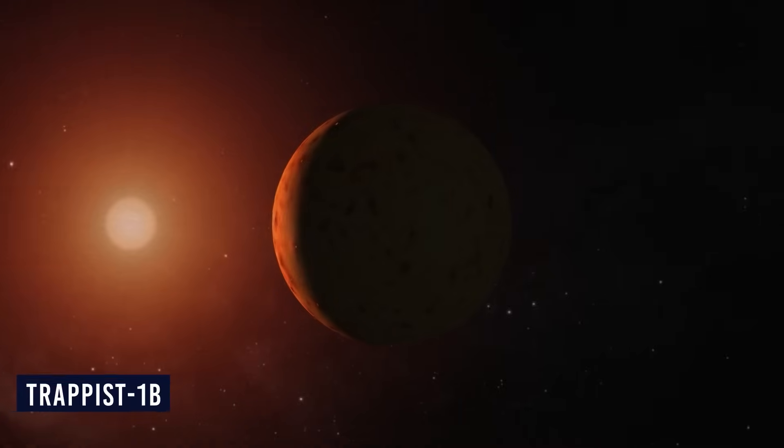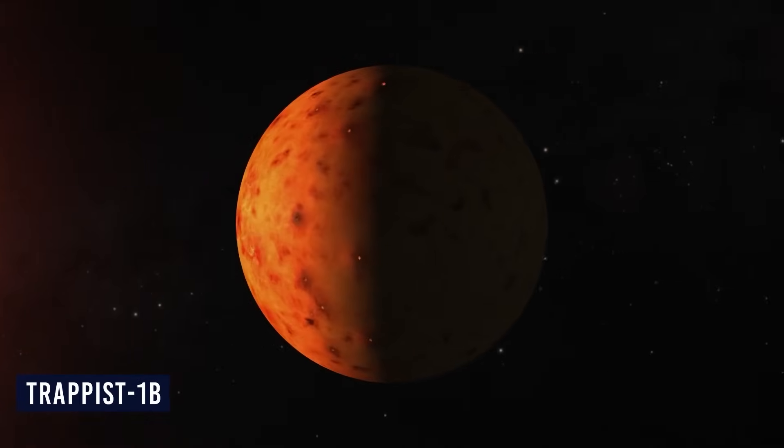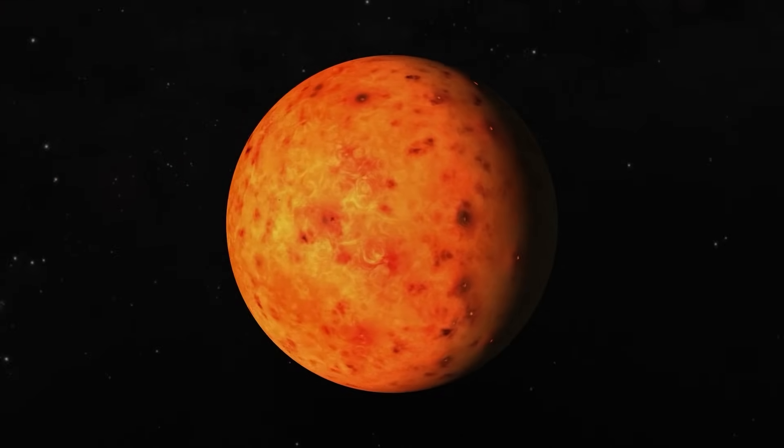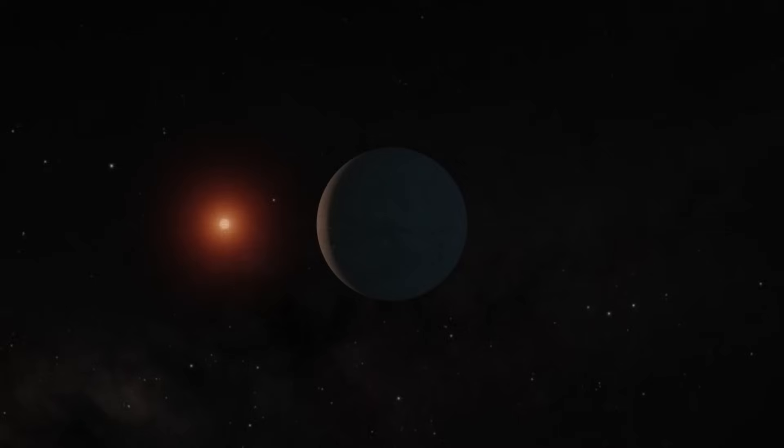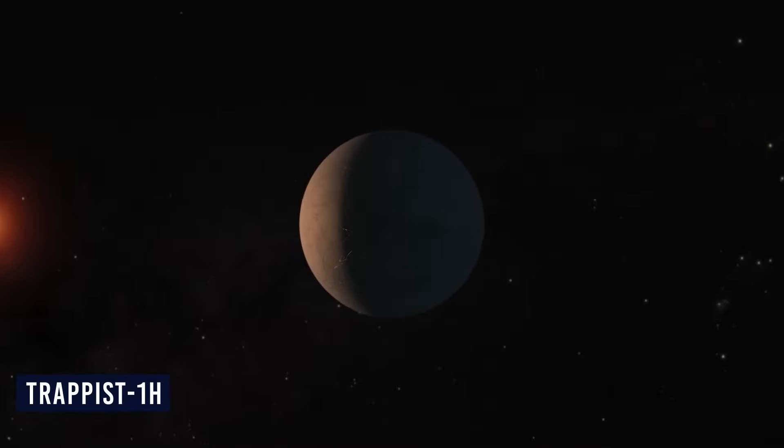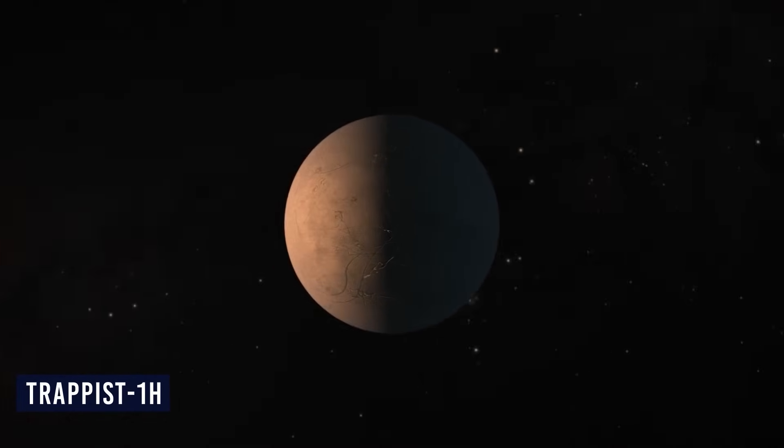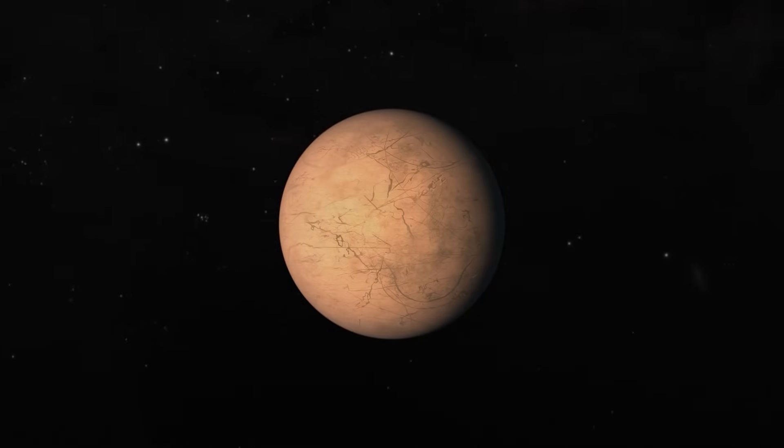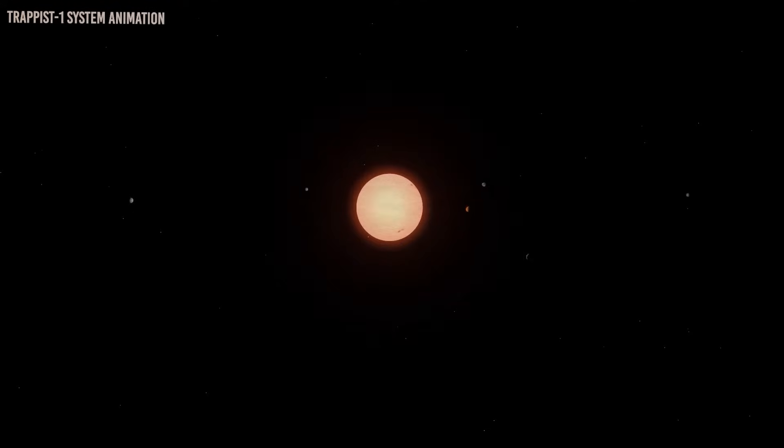TRAPPIST-1b, the closest planet, it zooms around its star every 1.9 days. Meanwhile, TRAPPIST-1h, the farthest planet, has a year that's fashionably short, just 19 days. These planets are likely doing the celestial tango, showing only one face to their star. It's like the ultimate one-sided relationship, just like how the Moon vibes with Earth.